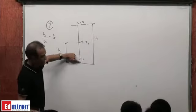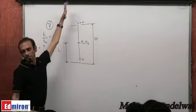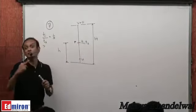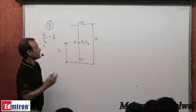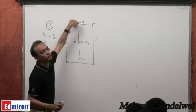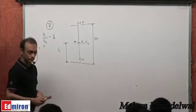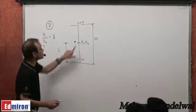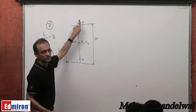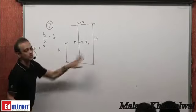A particle is launched from the ground with velocity u. At the highest point velocity = 0 and capital H is the maximum height. There is an intermediate point P at height h which is crossed at two instants: t₁ (going up) and t₂ (coming down), with t₁/t₂ = 1/3. We want to find h in terms of H.